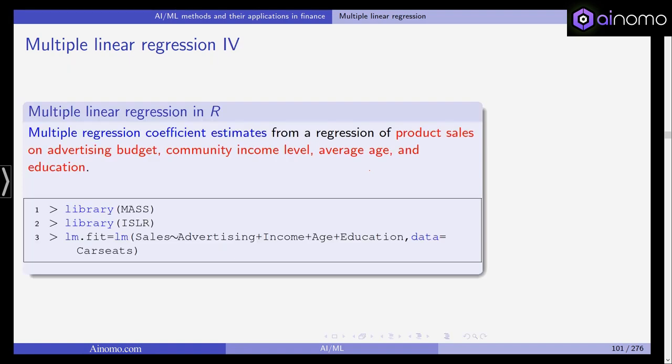Let's have a look at this in R. We estimate the regression coefficients using the car seats data set from the ISLR package, which is the companion package for the statistical learning textbook. We want to predict product sales based on advertising budget, community income level, average age and education in those communities. First we load the library MASS for regressions and ISLR which includes the data.